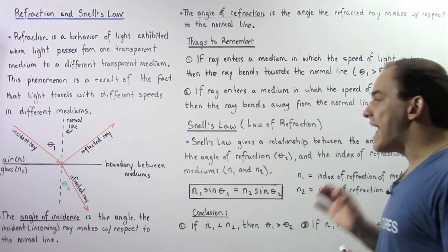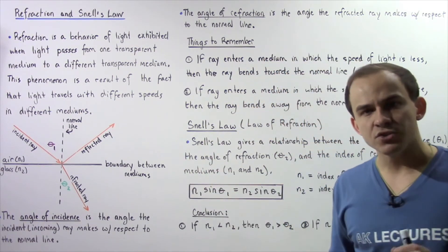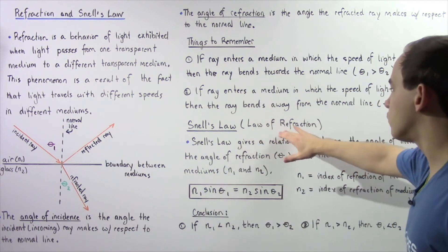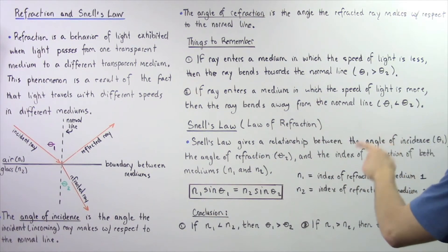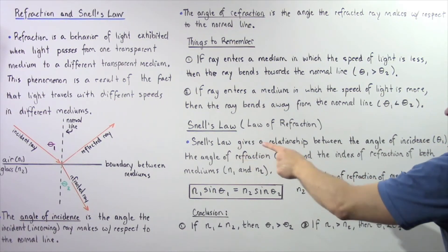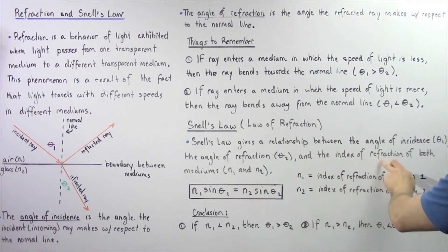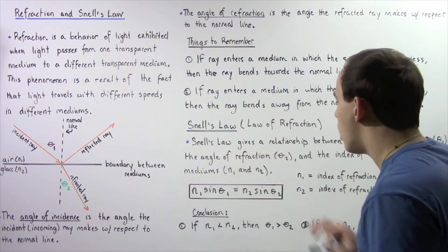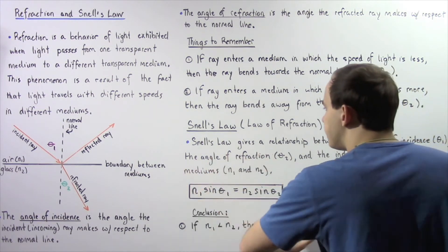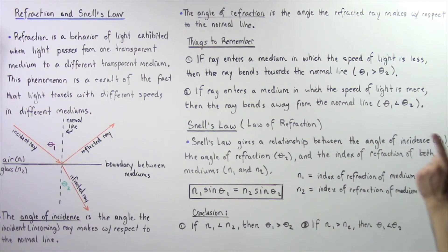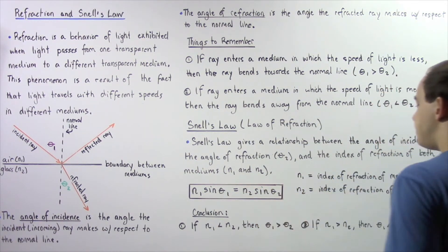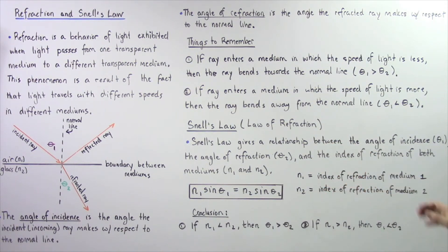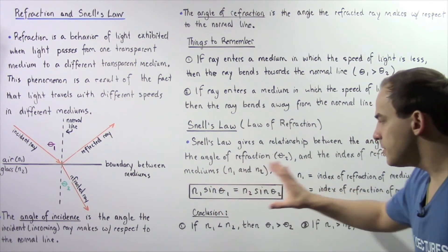Now we're going to define an important law known as Snell's law, also known as the law of refraction of light. Snell's law gives us a relationship between the angle of incidence theta one, the angle of refraction theta two, and the index of refraction of both mediums given by N1 and N2. Snell's law is given by the equation: N1 multiplied by sine of theta one equals N2 multiplied by sine of theta two, where N1 is the index of refraction of medium one and N2 is the index of refraction of medium two.